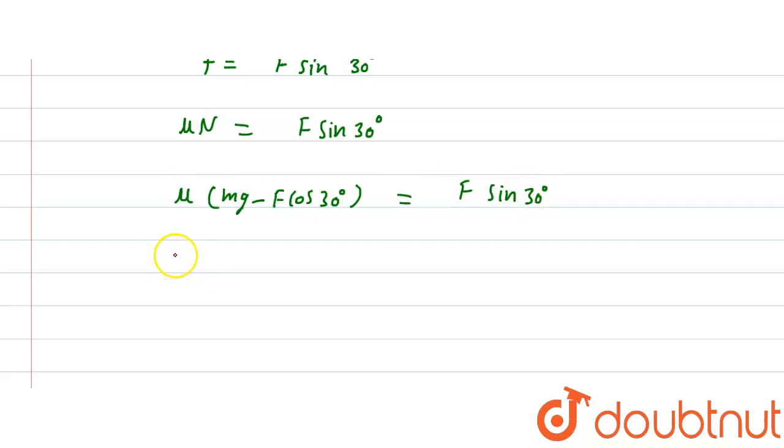Now here put the value of μ given in question, 0.6, and m is 50, g take 10. And here we have to find, F cos 30 is √3/2, and here F sin 30 is 1/2.